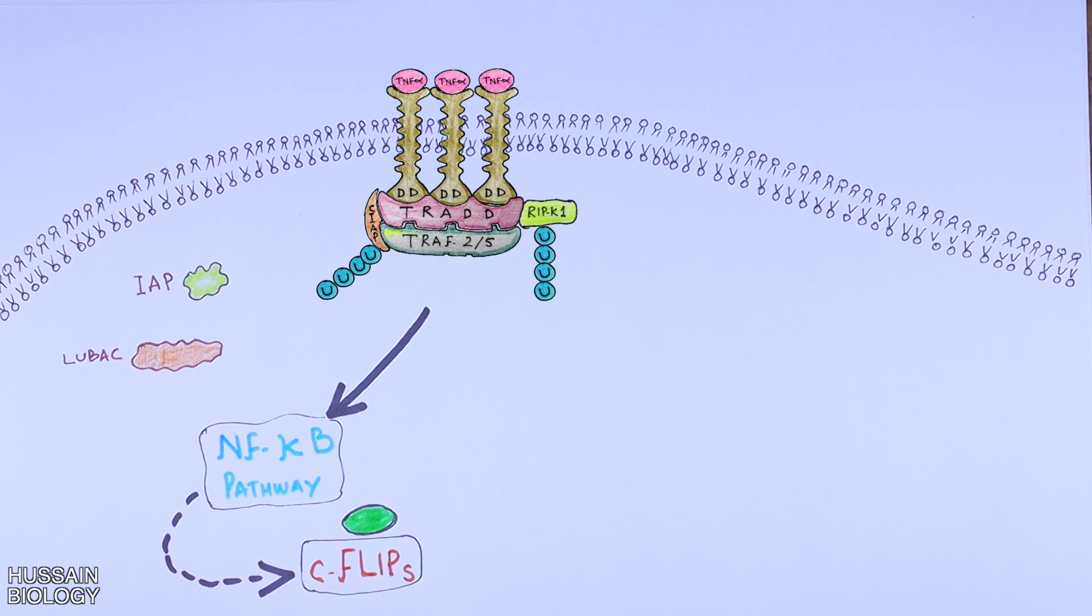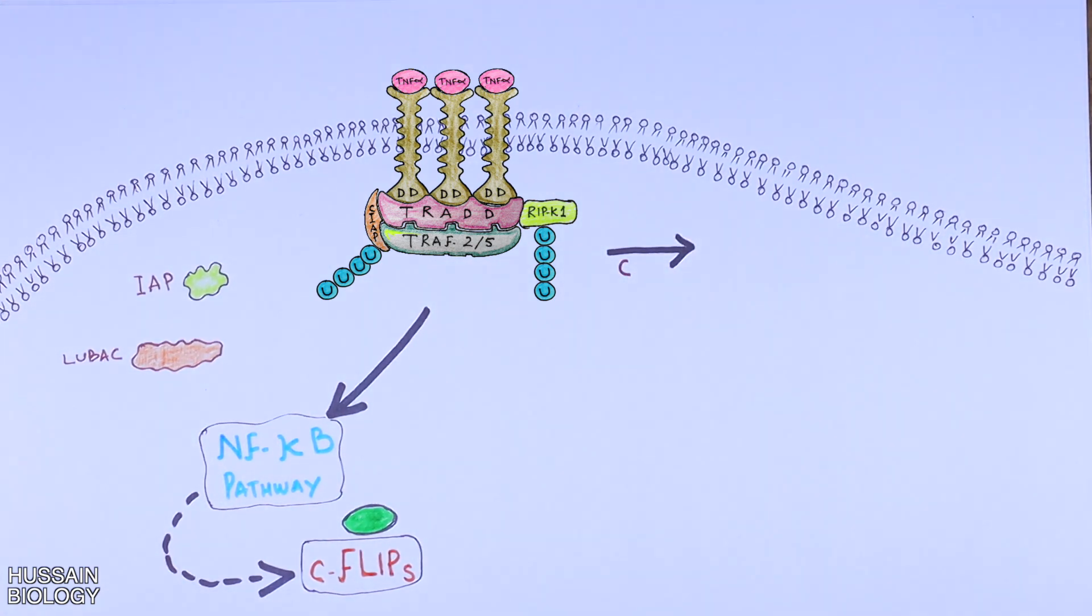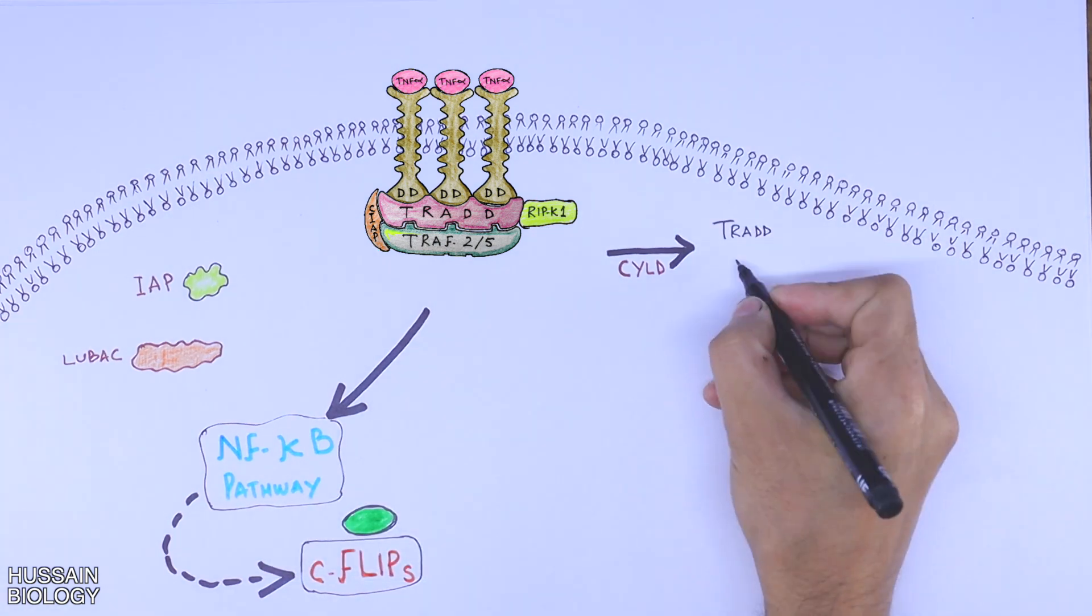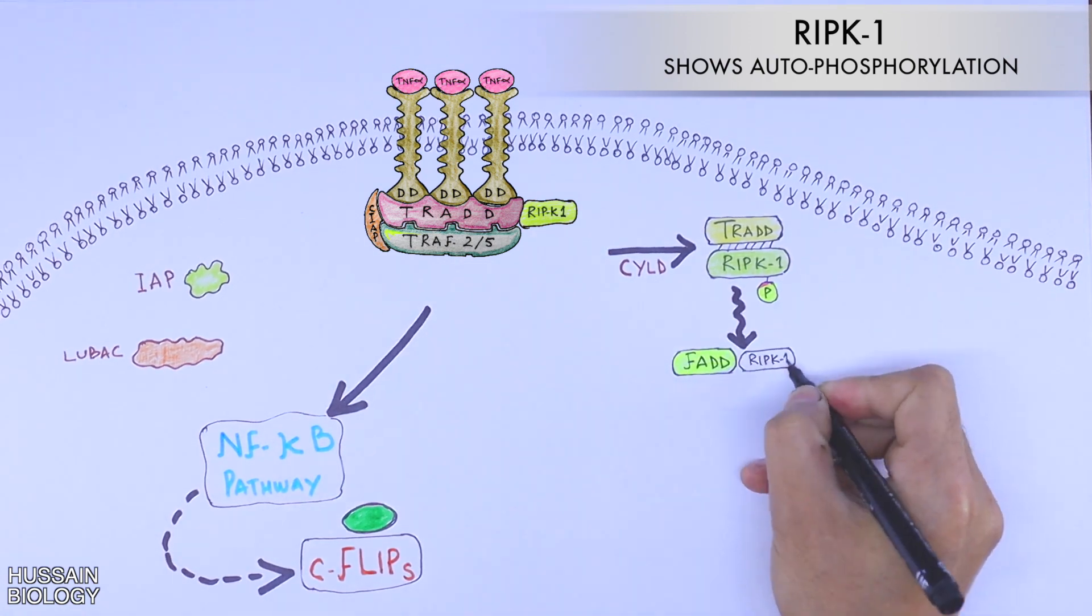Getting back to the TREAD-TRAP-RIP complex, the complex is ubiquitinated. To get into necroptosis pathway, first we need to deubiquitinate the proteins, and it's done by CYLD molecule. From this process we get deubiquitinated RIPK1 protein, which further recruits FADD as shown in the diagram.